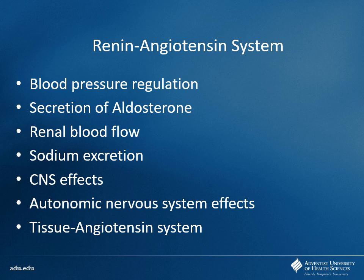Angiotensin II constricts the efferent arteriole while prostaglandins dilate the afferent arteriole, building up pressure in the glomerulus and increasing GFR. Once GFR rises and the kidneys are satisfied, renin release decreases — a negative feedback loop, essentially homeostasis. By attacking this system, either by reducing angiotensin II production or blocking its receptors, you can very potently drop blood pressure because it acts on so many different aspects.